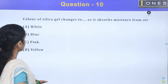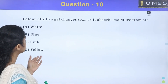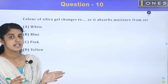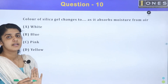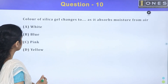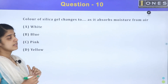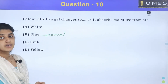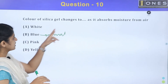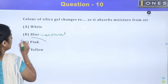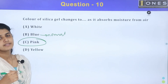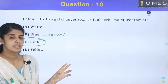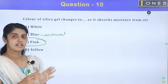Next question: the color of silica gel changes as it absorbs moisture from air. The normal color of silica gel is blue. When it is 50% water-saturated and moisture is absorbed, the color changes to pink. Silica gel is used in breathers of conservator-type transformers.